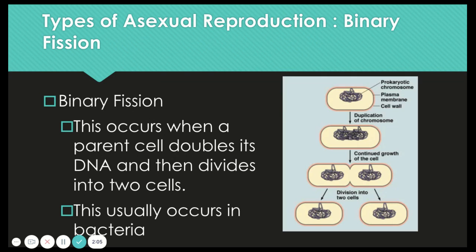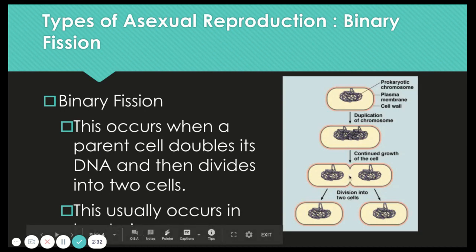Moving into a couple of types of asexual reproduction. The first one is binary fission. We usually see binary fission in bacteria. This occurs when a parent cell doubles its DNA — so it replicates its DNA — and then divides into two separate cells. This is probably one of the more common ones. We have that prokaryotic chromosome, which eventually duplicates. The cell continues to grow until there is enough material and energy within it to divide into two separate cells.